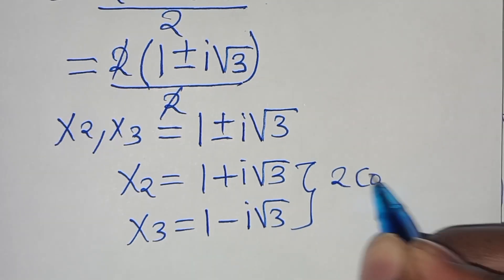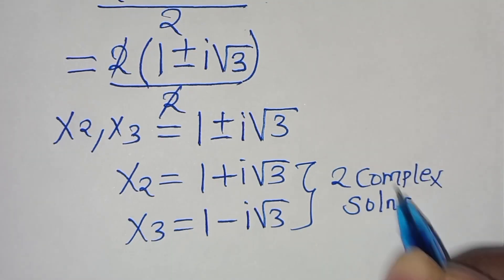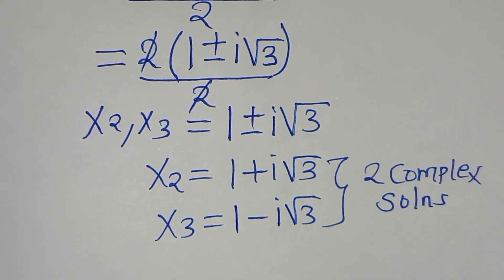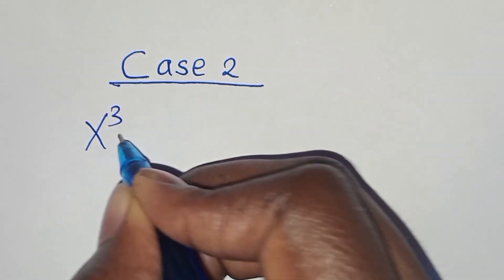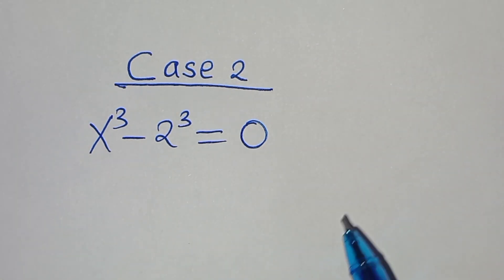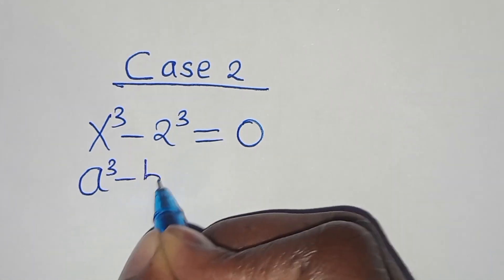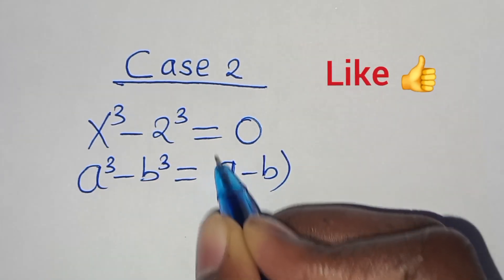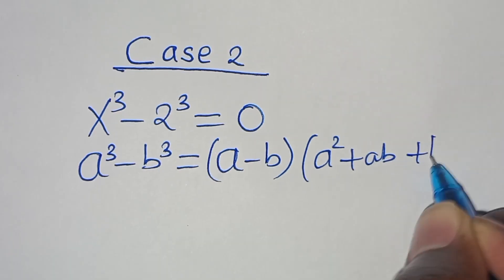Let's proceed to case 2. In case 2, we have x to the power of 3 minus 2 to the power of 3 equals 0. This equation is in the form of a to the power of 3 minus b to the power of 3, which we can express as a minus b times a squared plus ab plus b squared.